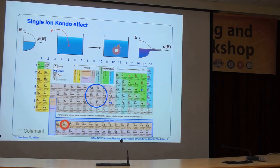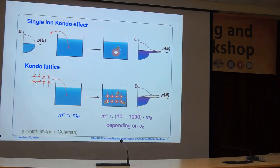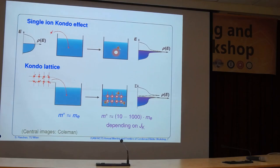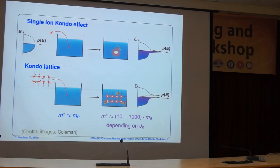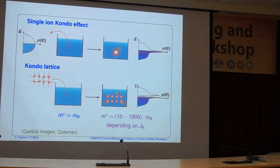In heavy fermion materials, we are interested in a lattice of local impurities — cerium on a regular lattice site in the compounds. Doing this for the whole lattice gives rise to the hybridization gap in the Kondo resonance. In heavy fermion metals the Fermi energy is in one of the parts of the Kondo resonance, so they are metals. But we can also have the interesting situation, as shown in the talk by Suchitra, where the Fermi energy is in the gap — those are Kondo insulators.